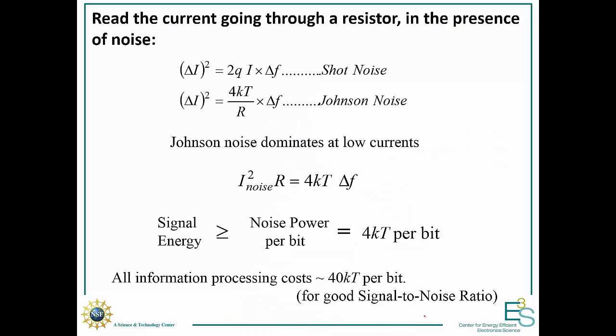To read the current through a resistor, we have to overcome both the shot noise and the Johnson noise. If you're trying to use minimum energy and operate at low currents, this I will go towards 0, but we'll still have Johnson noise. That's what's going to dominate at low currents. We have to put in at least 4 kT of energy just to overcome noise. But we need a good signal to noise ratio because we don't want errors. We're going to need about 10 times as much, 40 kT per bit. This is the minimum energy we would want to use to just overcome noise and operate a transistor.